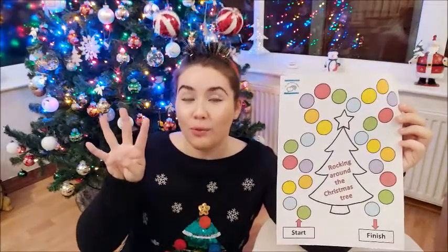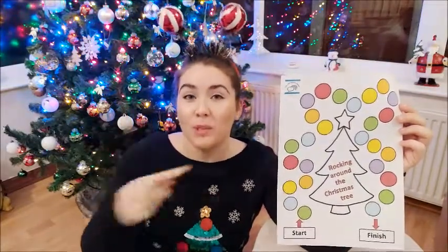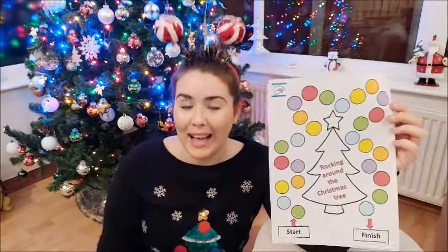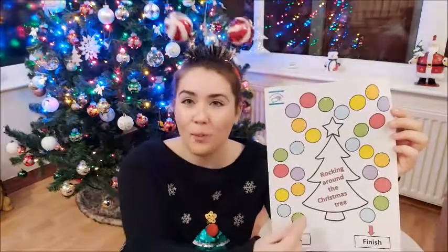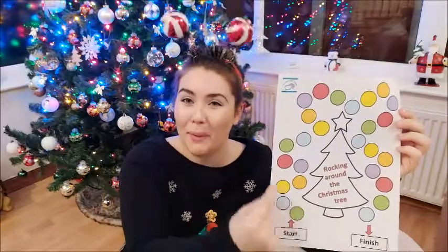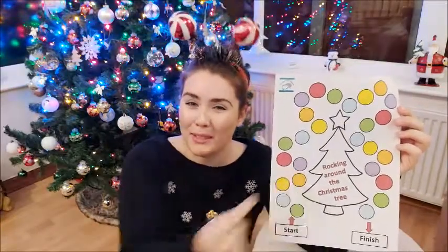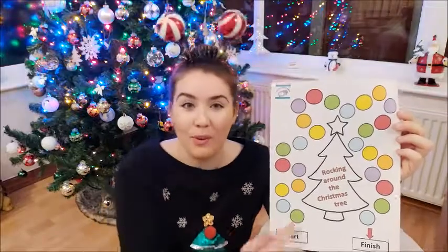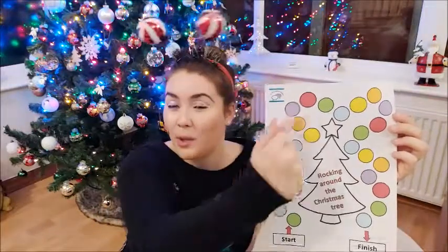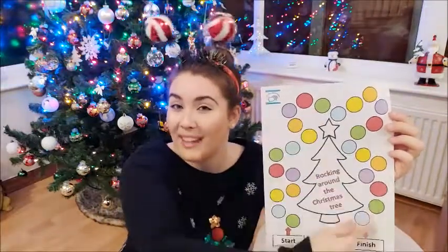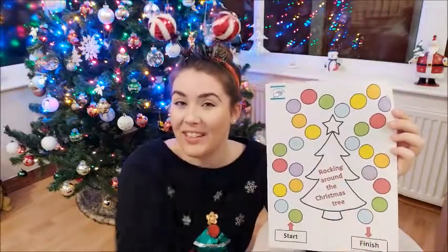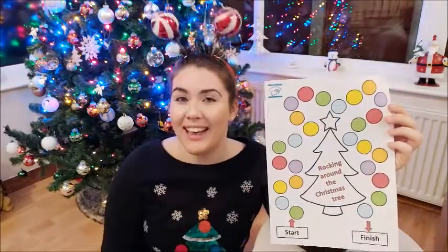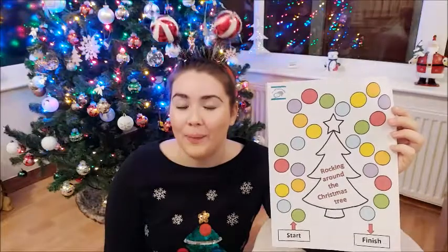So if you rolled a four, you would do that four times, and then once you've done it, move your counters around the tree. Whoever rocks around all the way fastest and finishes first is the winner.